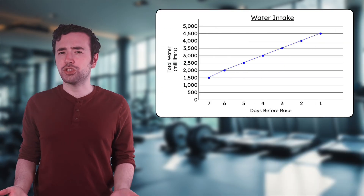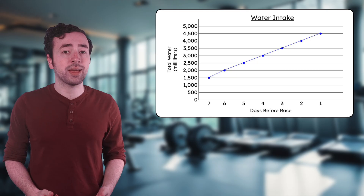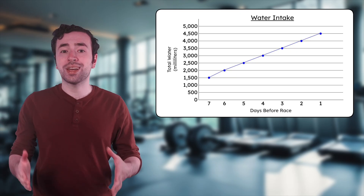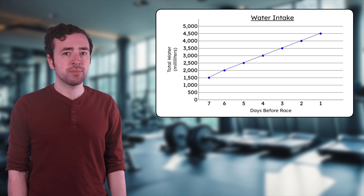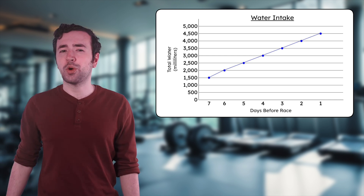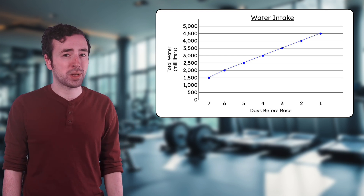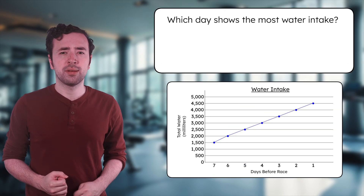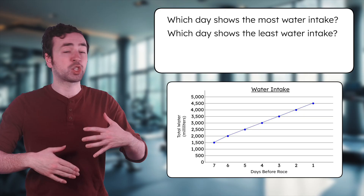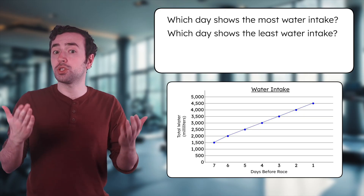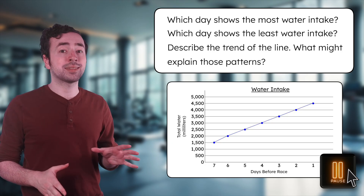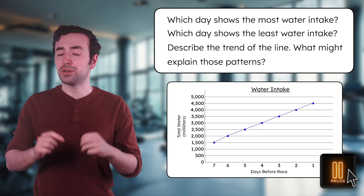Moving on, we also have data on hydration. Athletes tracked their daily water intake, and the data is displayed here on a single line graph to show how it changed over the week leading up to race day. Use the graph to help answer the questions we'll consider for our training guide: Which day shows the most water intake? The least? Is the trend steady, or are there jumps or dips? What might explain those patterns? Pause here to analyze the graph and record your thinking in your guided notes.